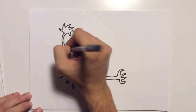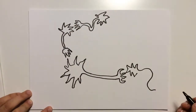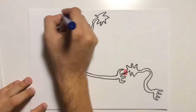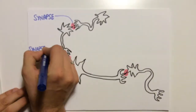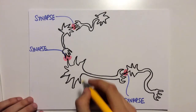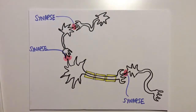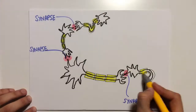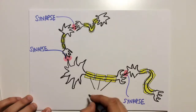All the neurons are connected to form nerves. These connections are called synapses. The axons of the neurons are covered by a substance called myelin, which gives protection to the neuron.